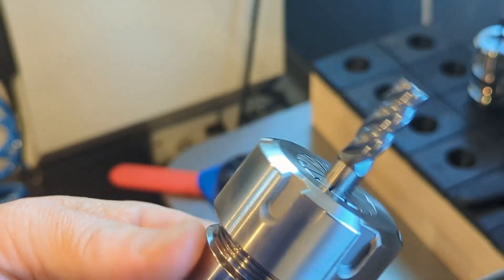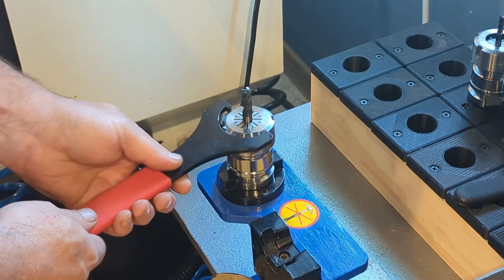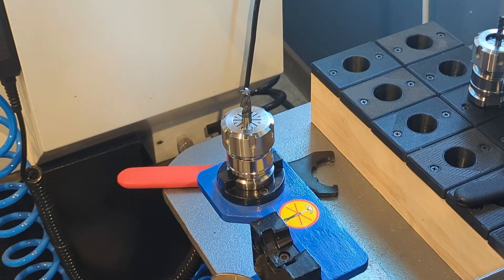Now that I have it snug, I can put it back in my collet vise. Tighten it the rest of the way. That's it. That's how you do it.